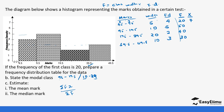Whether you use the original class intervals or the upper and lower limits you get the same answer. For 19.5 to 39.5: 39.5 plus 19.5 equals 59, divided by 2 gives 29.5. For 39.5 to 49.5: 39.5 plus 49.5 equals 89, divided by 2 gives 44.5.